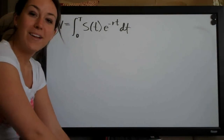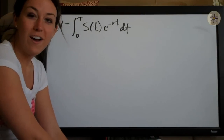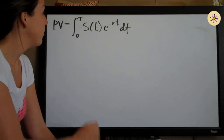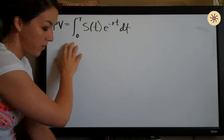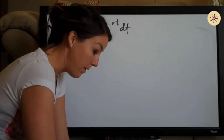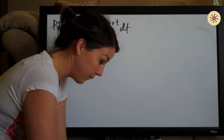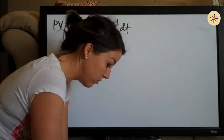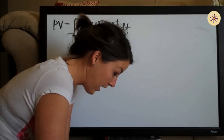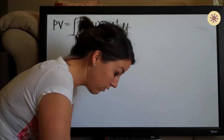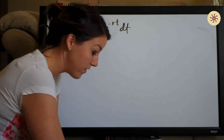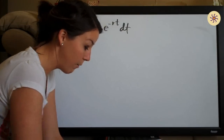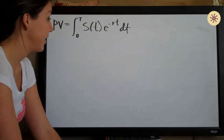Hi everyone, welcome back to integralcalc.com. We're going to be doing another present value problem today. This one is going to use the formula that I've written here on the board. The problem asks us to suppose that money is deposited steadily into an account at a constant rate of $15,000 per year for five years. Find the present value of this income stream if the account pays seven and a half percent interest compounded continuously.